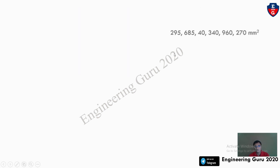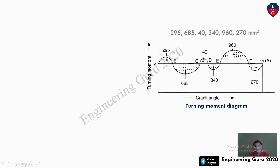We need to find Cs, the coefficient of fluctuation of speed. From the given areas above and below the mean torque line, we first plot the turning moment diagram carefully — x-axis is crank angle, y-axis is turning moment. The first loop above the mean line is positive with value 295.